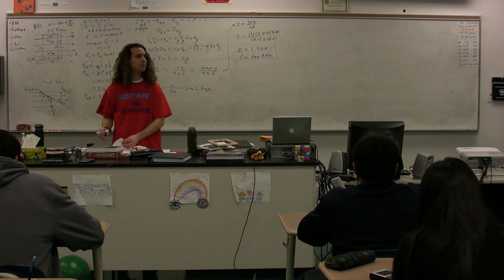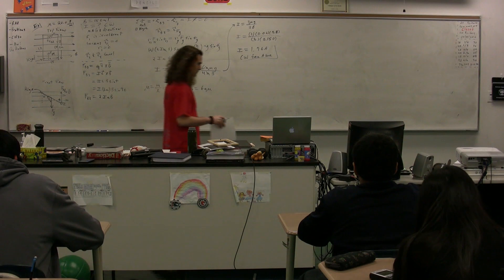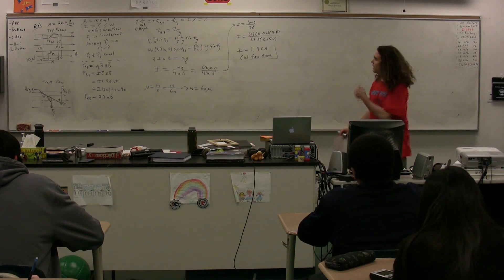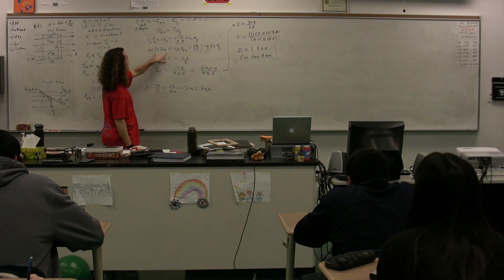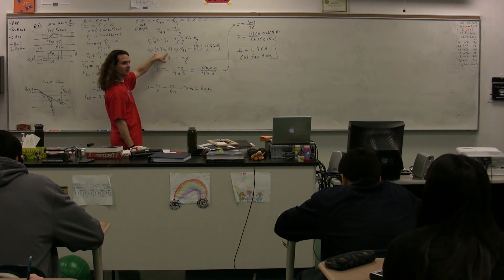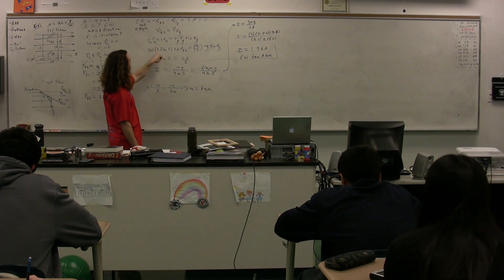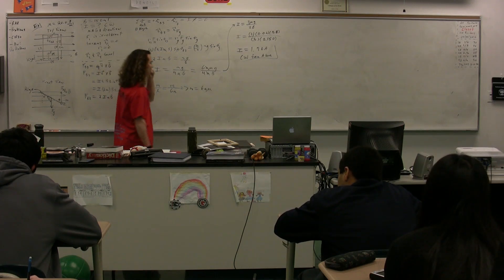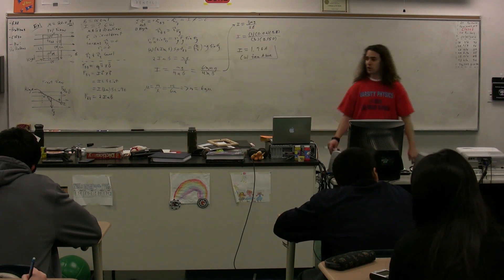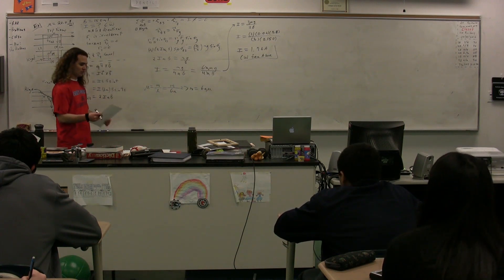A student asks whether the formula τ = IAB could have been used instead. The instructor confirms yes — torque equals I times area (A × 2A) times B times sinθ gives exactly the same result. The instructor preferred to work through the torque explicitly, but using the magnetic dipole torque formula is a valid alternative approach.